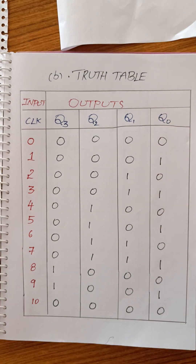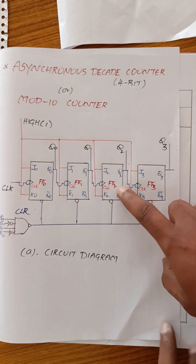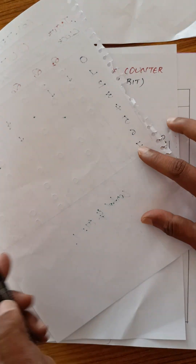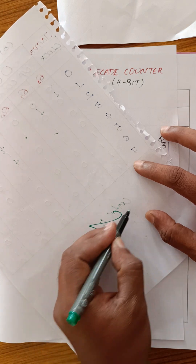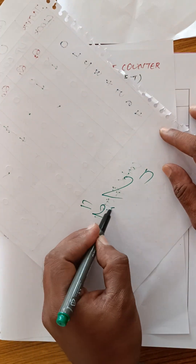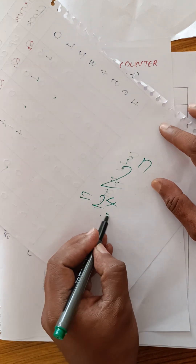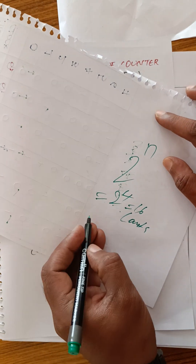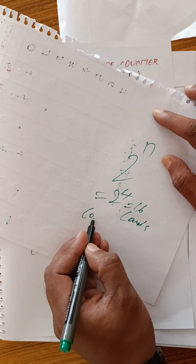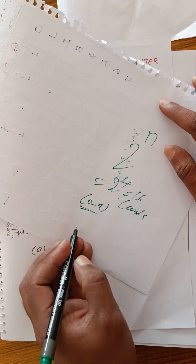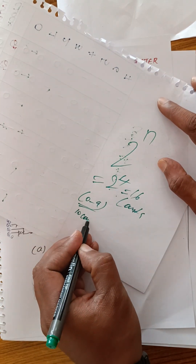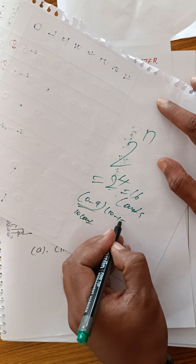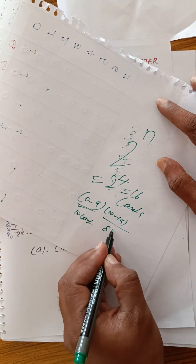For a 4-bit asynchronous counter with 4 flip-flops, using the formula 2 power N: 2 power 4 equals 16 counts. However, for the decade counter we use only 0 to 9 — that is 10 counts. The remaining states (10 to 15) are skipped or reset.